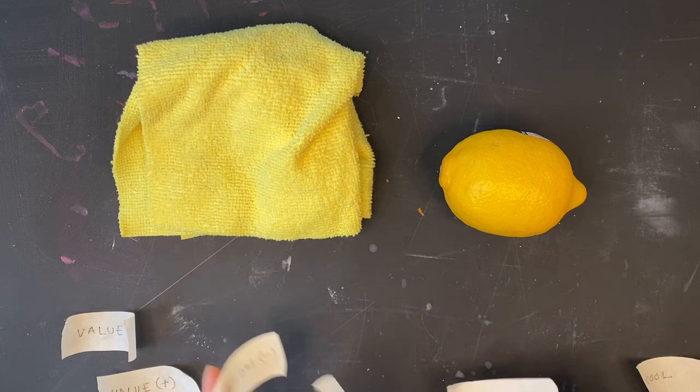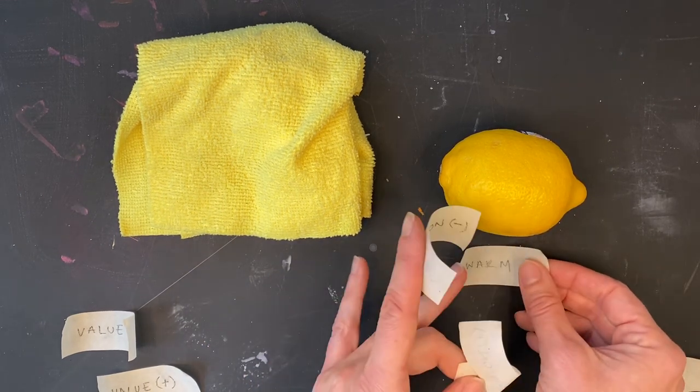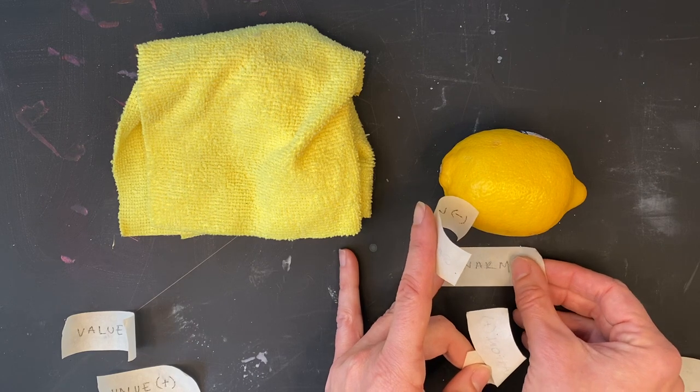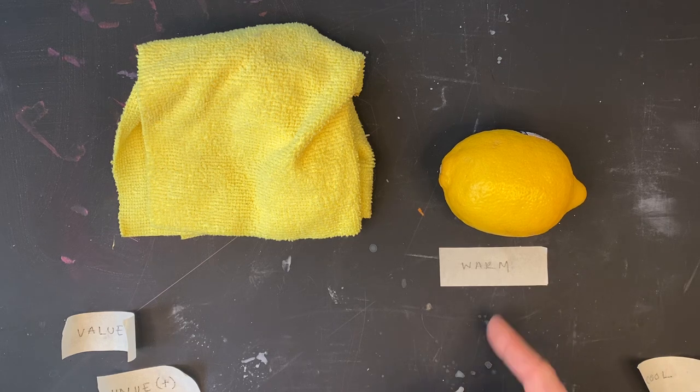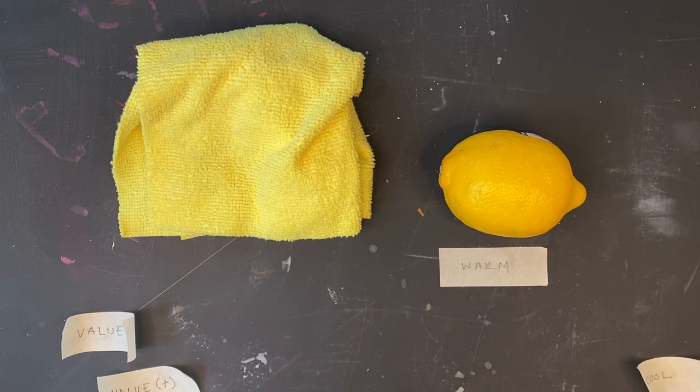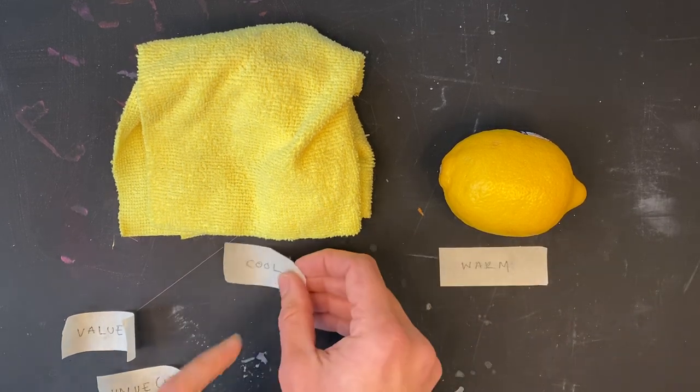The lemon is our warmer yellow. That lemon actually starts to lean towards red. So what I'm going to do, I take my piece of paper. It says warm, and I'm going to tape it either on the object or below it. Then conversely, I'm going to put my cool.